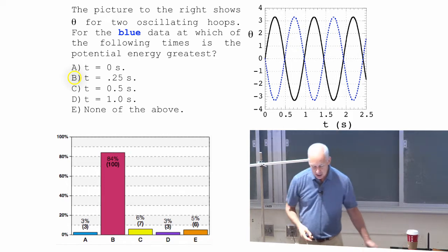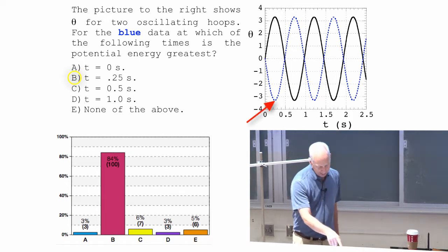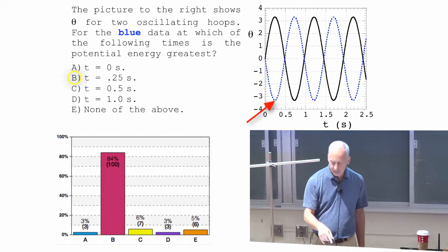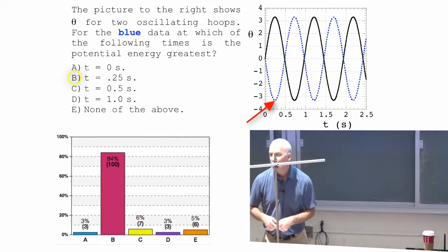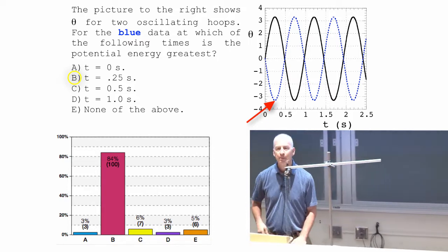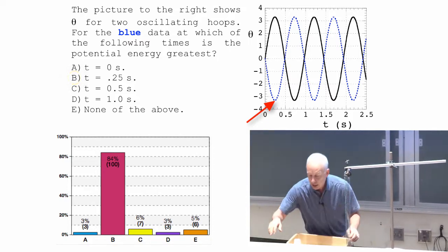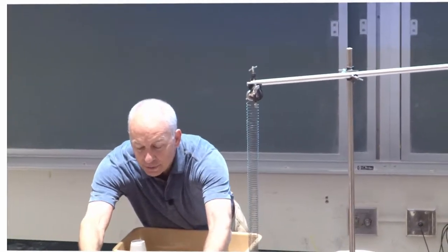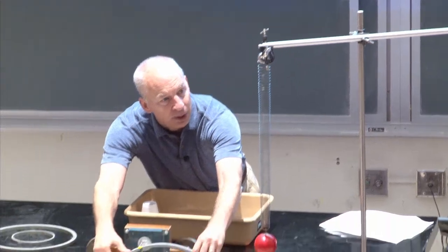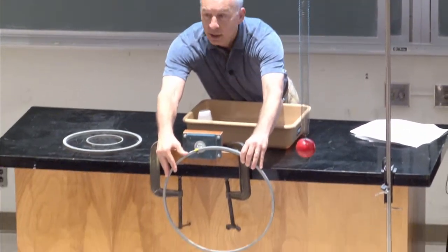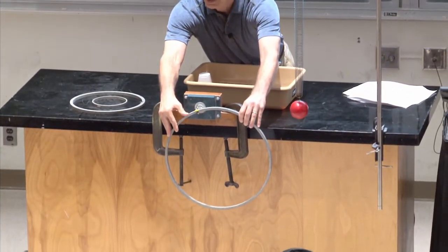When you're away from equilibrium, like B here, the farthest from equilibrium is the highest potential energy. And when you're the farthest from equilibrium, your kinetic energy is zero.